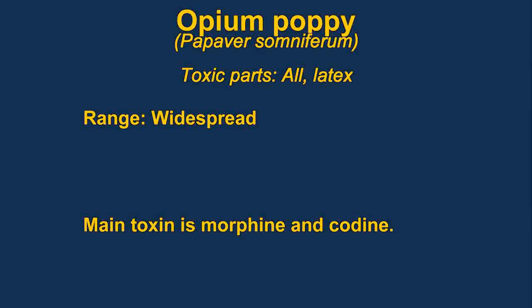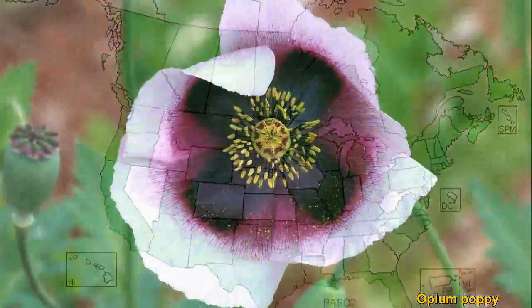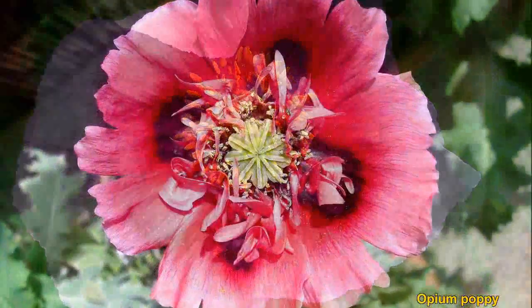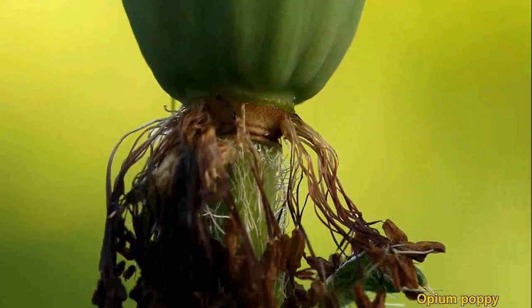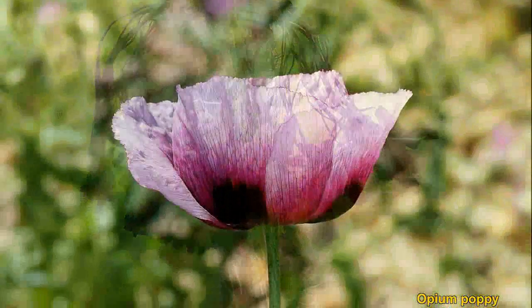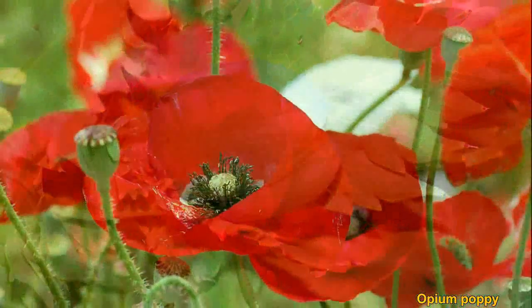Opium poppies are illegal to grow, but they're still widespread. The poisonous part of the plant is the milky sap, though all parts are poisonous. Symptoms include stupor, coma, shallow and slow breathing, and respiratory and circulatory depression. They are often grown for their seeds, which are edible. Not all poppy plants contain the alkaloids.